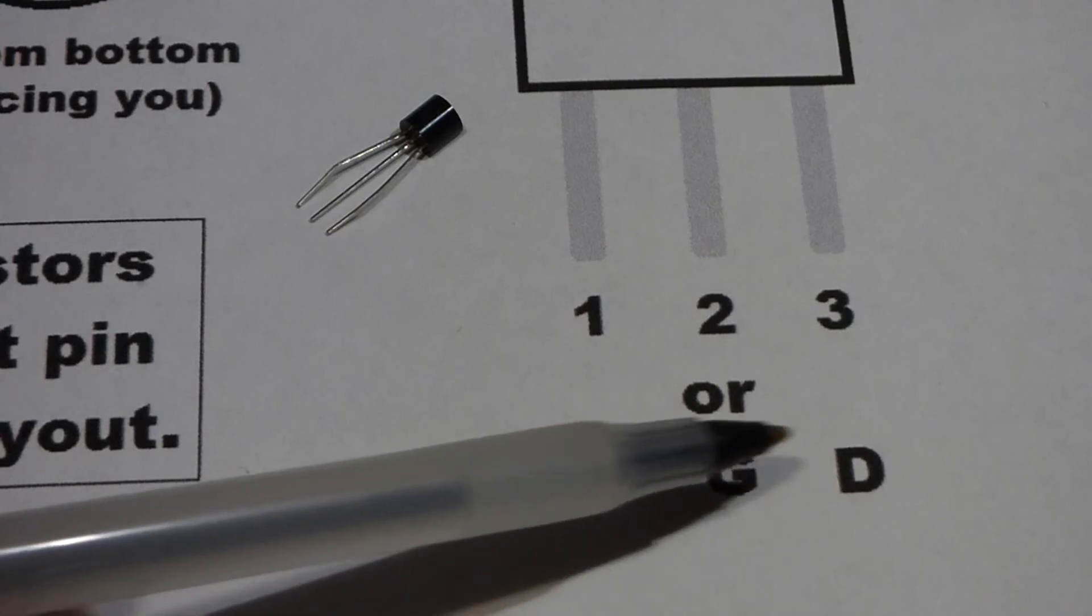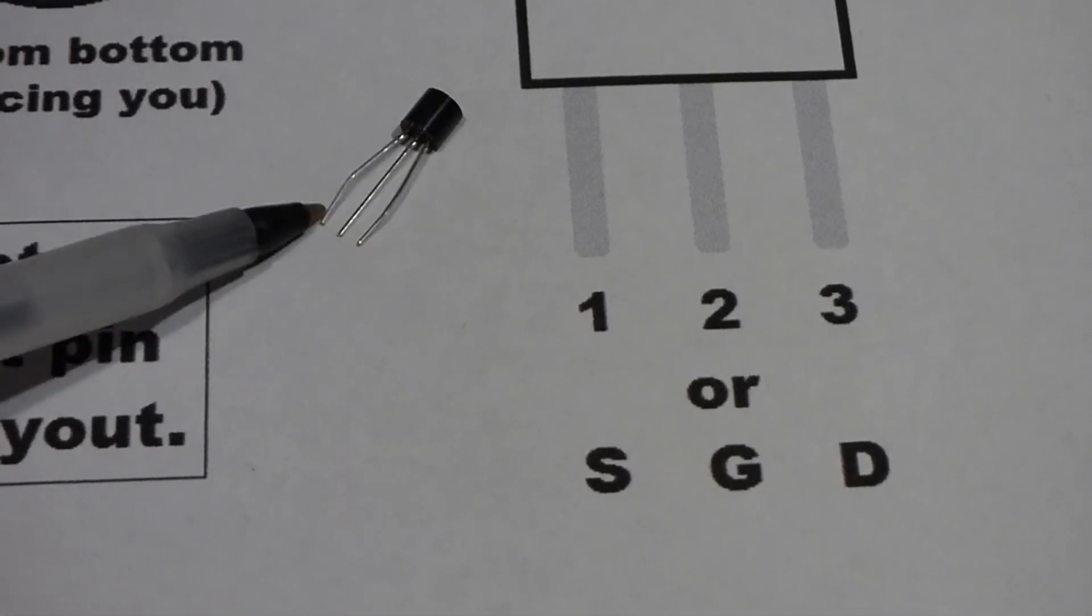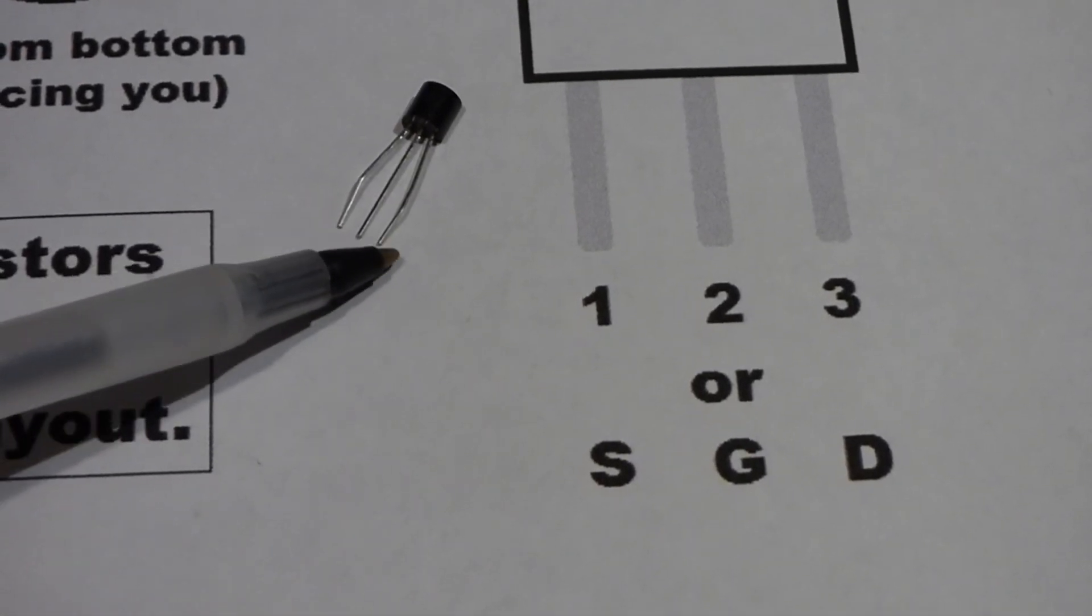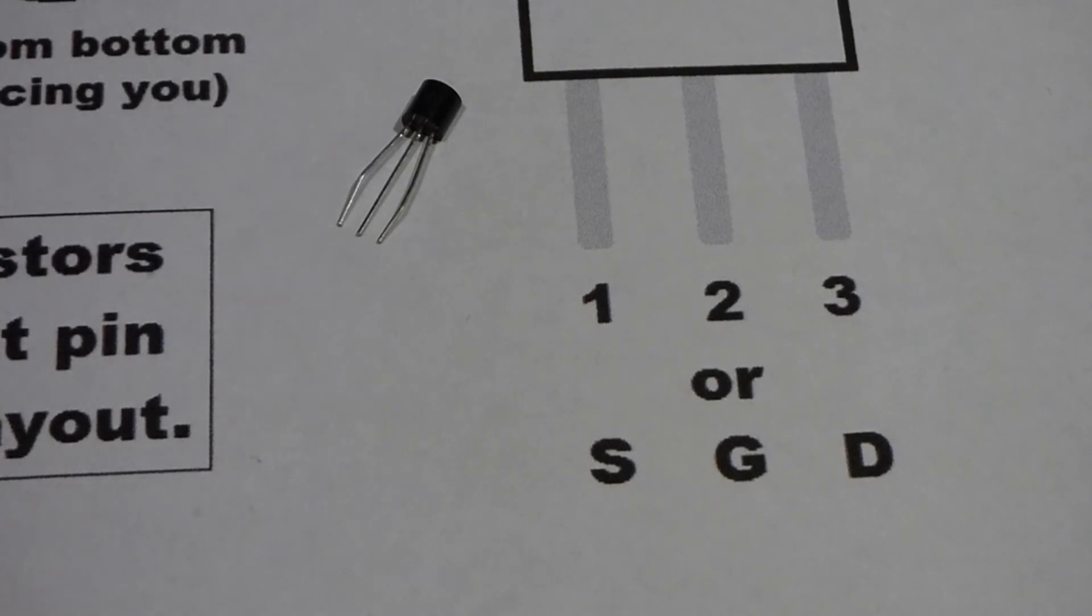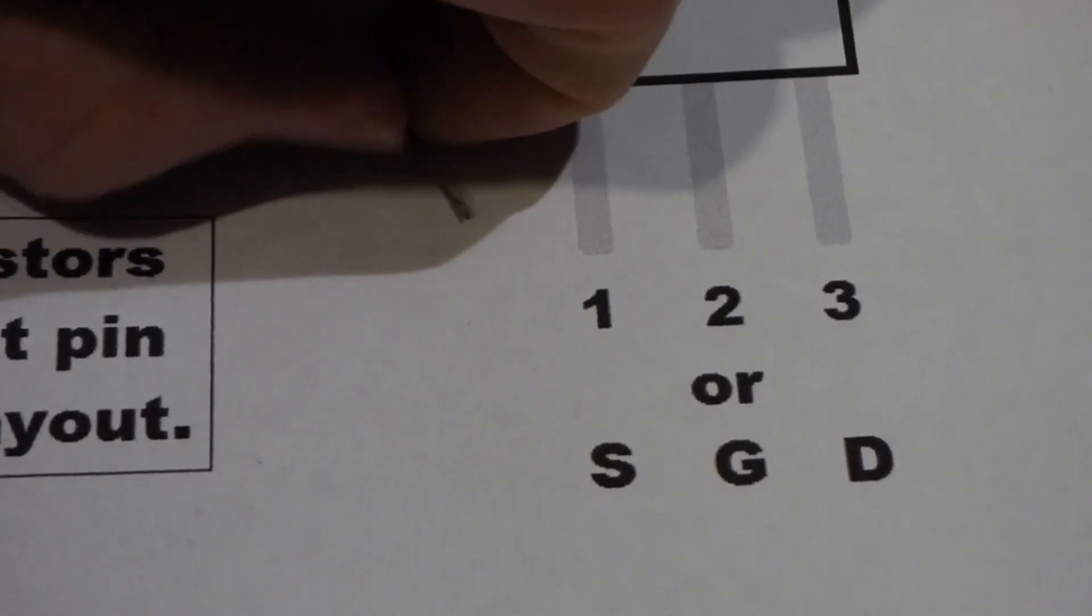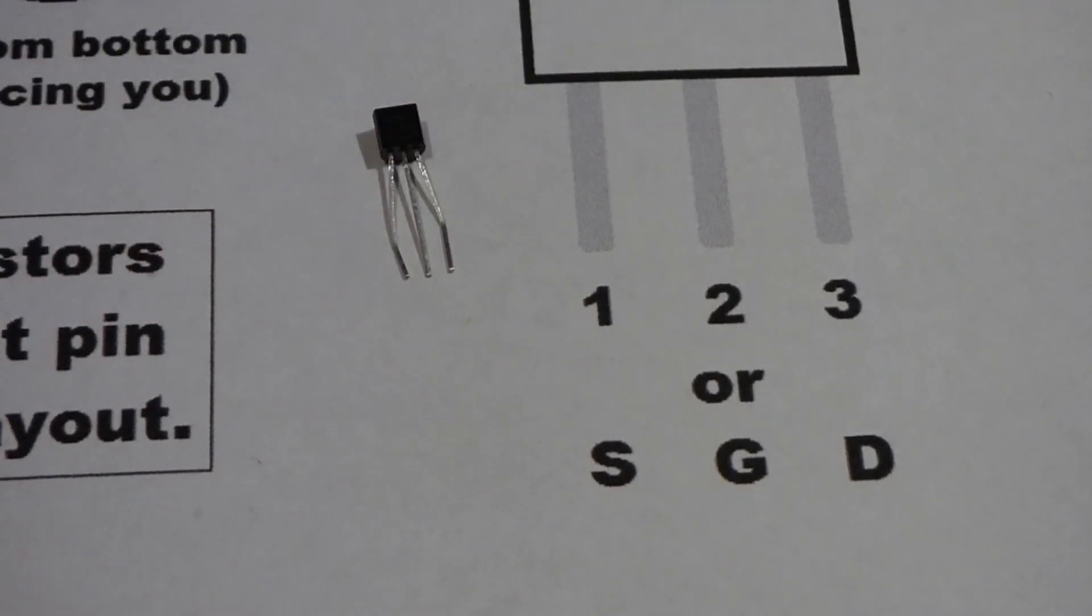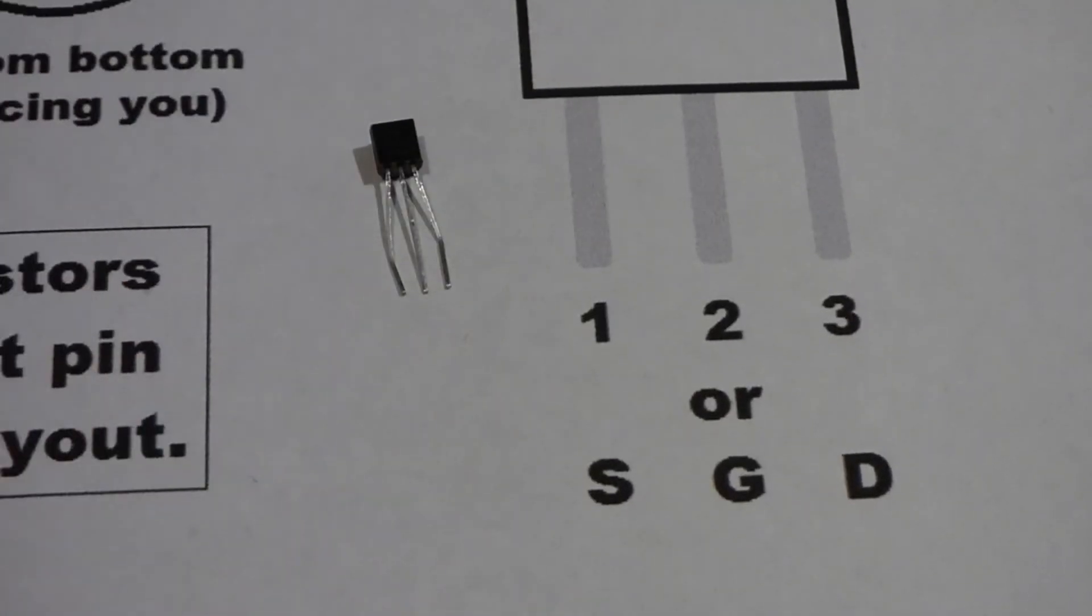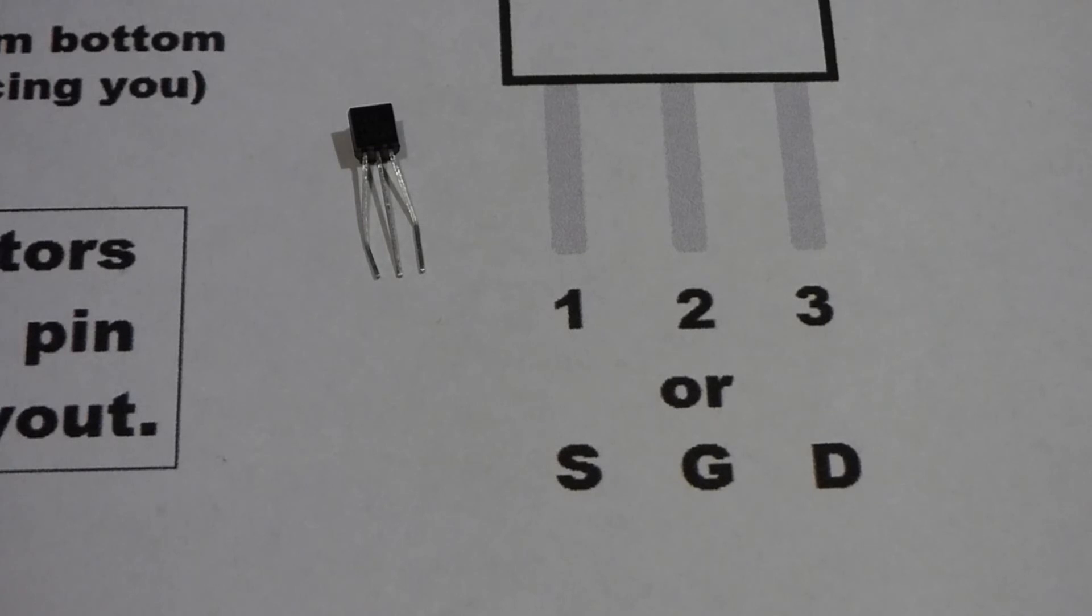And instead of the source gate drain, now we have the drain, the gate, and the source with this transistor because I turned it around. Of course, if I flip it with the flat edge facing us, it goes back to the normal one, the diagram I like. But that's something you've got to be aware of.